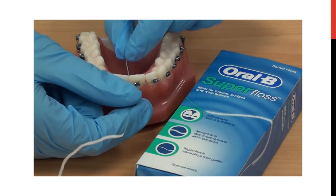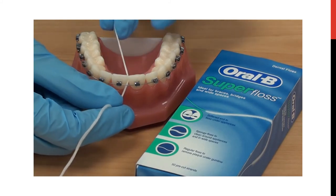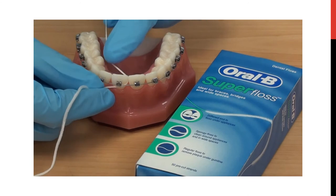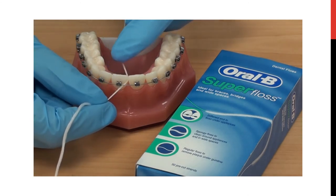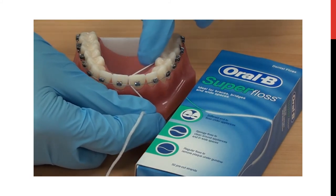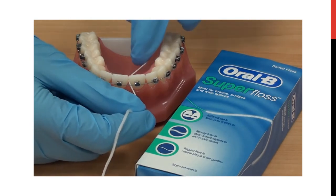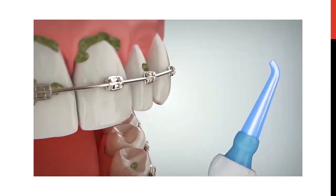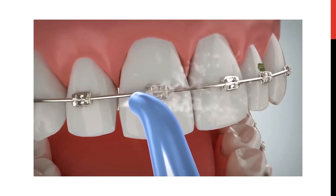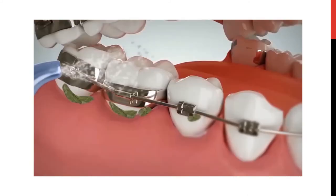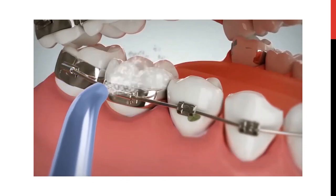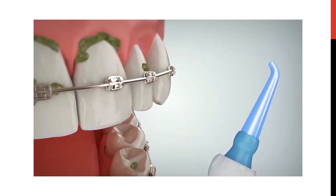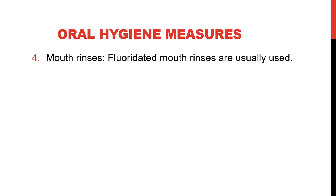This video demonstrates using super floss. Super floss has an initial rigid portion which can pass between the teeth, then a spongy portion is used to floss the interdental region. For each region we should clean both teeth — the right and left. Then the super floss is taken out and inserted between another two teeth. A water jet, which is a device that uses water at high pressure, can be used to remove plaque from the interdental as well as cervical region of the teeth. Fluoridated mouth rinses are usually used to maintain proper oral hygiene.